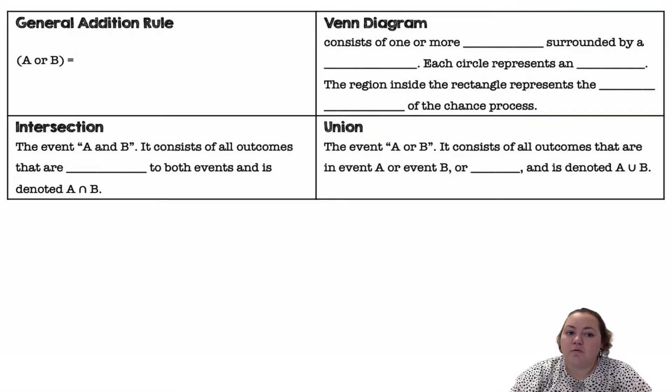Alright, so the general addition rule says that the probability of A or B is equal to the probability of A plus the probability of B minus the probability of A and B.